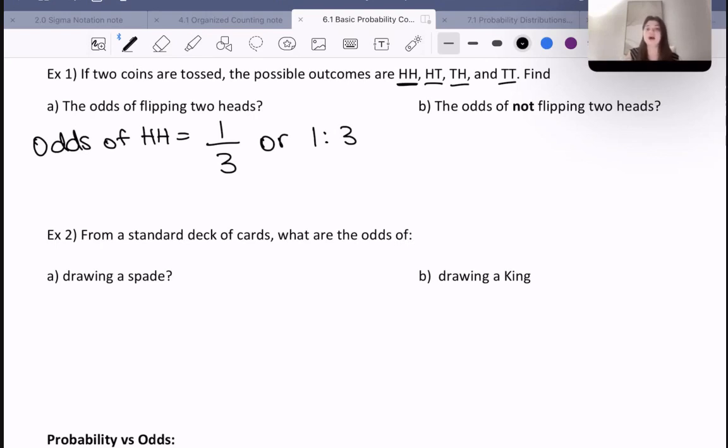What about the odds of not flipping two heads? In this case it's the opposite. We're going to have three over one or a three to one ratio, because there's three outcomes where we do not flip two heads. There's only one chance out of those four that we do flip two heads.